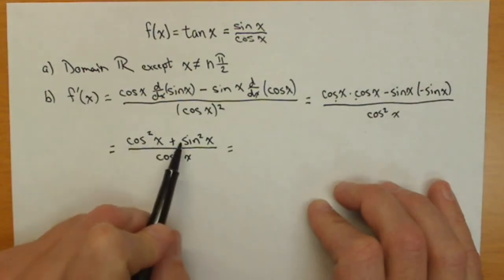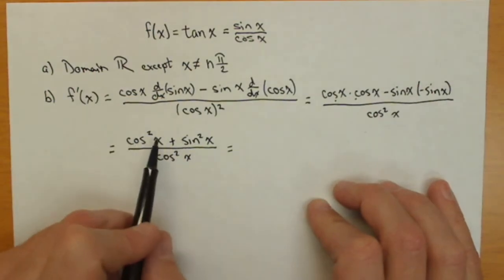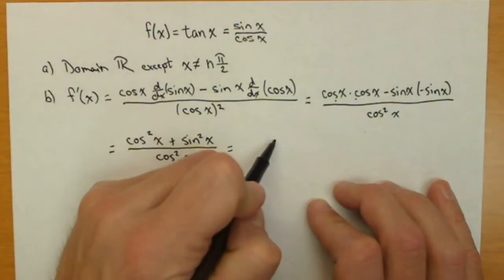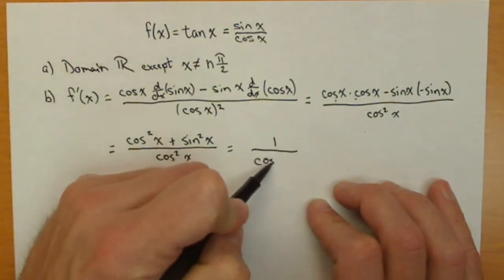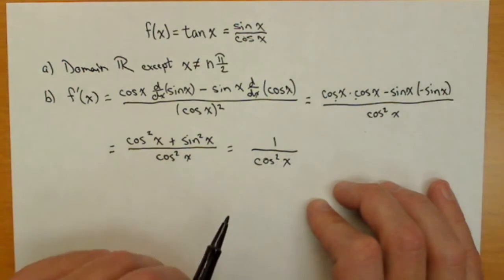And notice what we have here. This is the Pythagorean identity. Cosine squared of x plus sine squared of x will be 1. So, this is 1 over cosine squared of x.